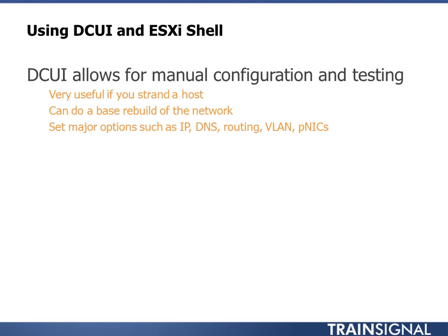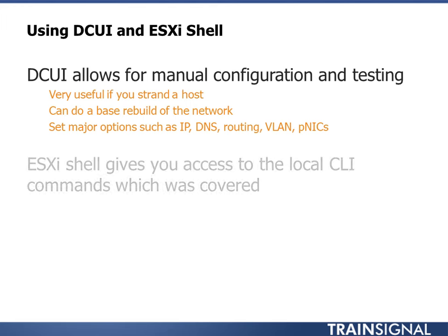The DCUI and the ESXi shell — DCUI allows for manual config and testing, and it's very useful if you strand a host. You can do a base rebuild of the network and set major options such as IP, DNS, routing, VLAN, and physical NICs. The ESXi shell gives you access to local CLI, and you can use those commands to further rebuild the networking if you need to.